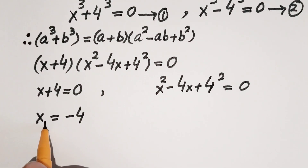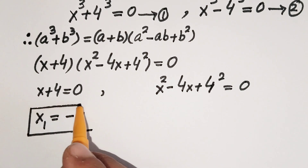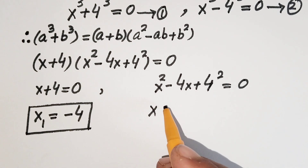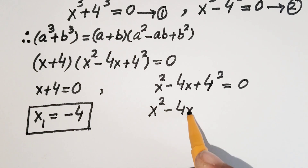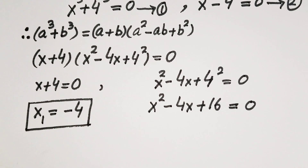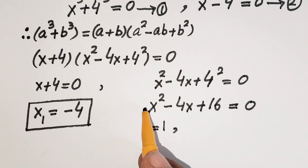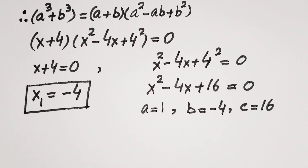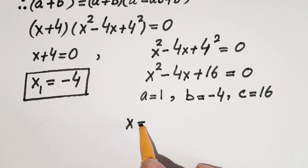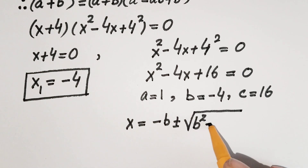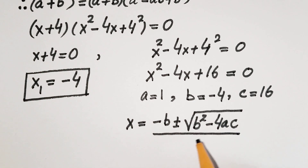So x₁ = -4 is our first value of x. Now for the second condition: x² - 4x + 16 = 0. This is a quadratic equation, which we solve using the quadratic formula. Here a = 1, b = -4, and c = 16.